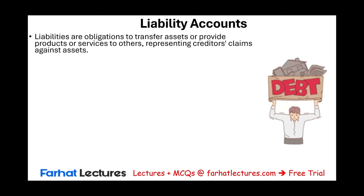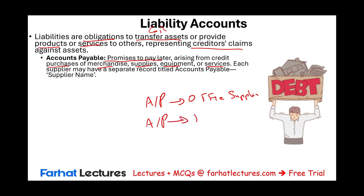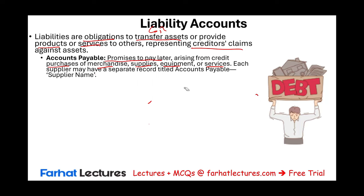From assets we move to liability accounts. Liabilities are obligations or debts — the obligation to transfer assets, usually cash, or provide products or services, representing creditors' claims against assets. Accounts payable is a very common liability arising from credit purchases of merchandise, supplies, equipment, or services. Each supplier will have a separate record — for example, accounts payable to Office Depot or Best Buy — so you can track who you owe money to.